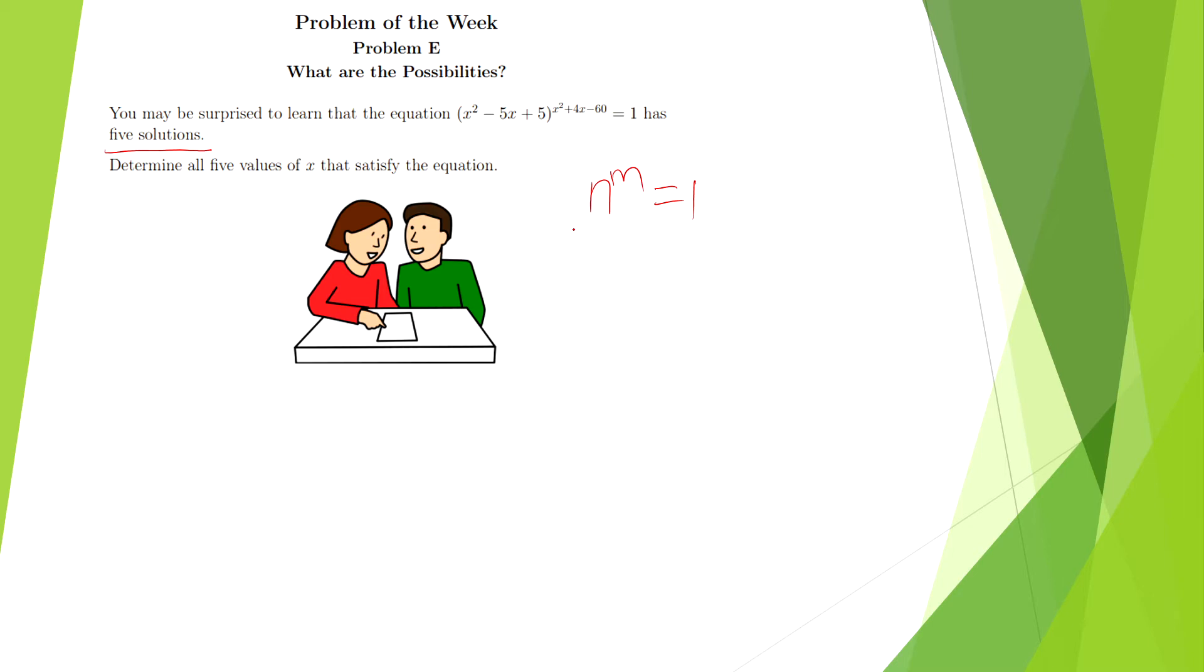For me, I noticed two cases immediately. I noticed the case where if m equals 0, n to the m will equal 1. And I noticed the case that if n is equal to 1, n to the m will always equal 1.